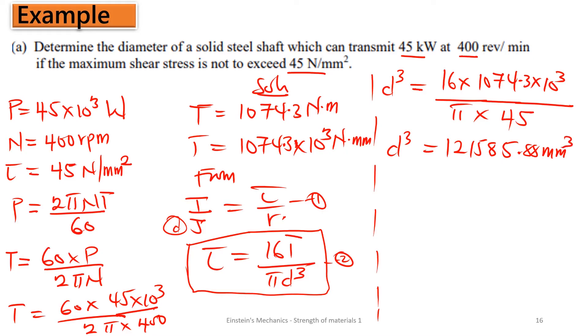This is going to give us d cubed to be 121585.88 mm cubed. We want the diameter, so you take the cubic root of both sides, and your d from here is going to be 49.54 mm. So this is the diameter of the solid steel shaft that is transmitting that power at that revolution and a shear of 45.